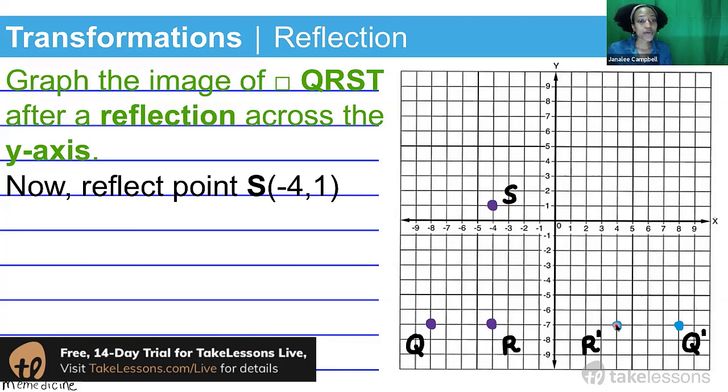Now we're going to reflect point S. We're on our third point of our original rectangle. It's located horizontally at negative four, which means we had to travel four units to the left of the origin. Recall the origin is located at zero, zero. And it's shifted upward one unit. So it's located at x equals negative four, y equals one.